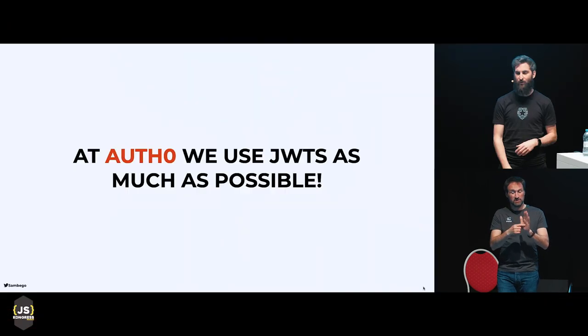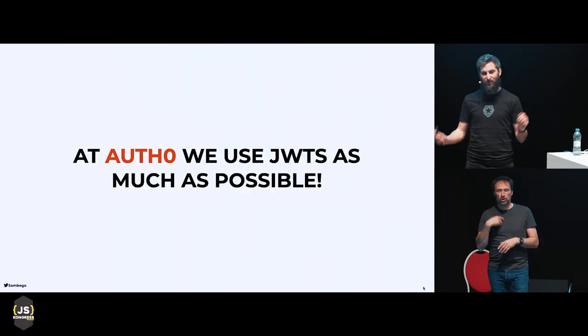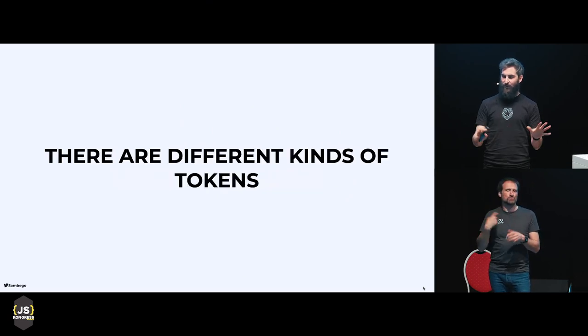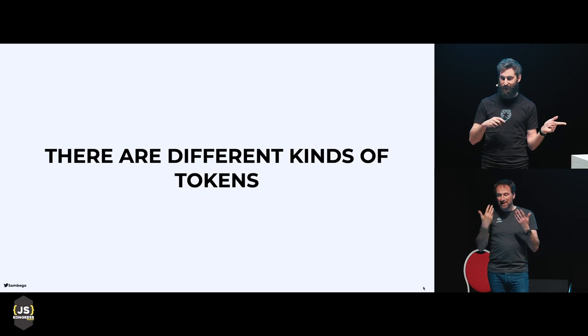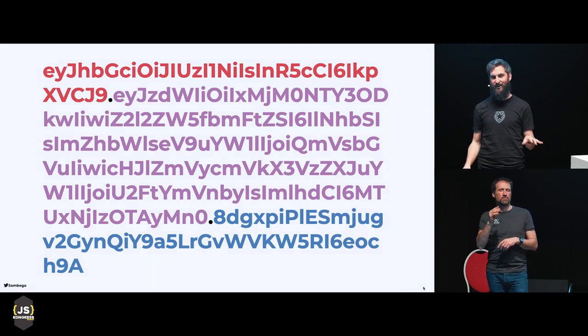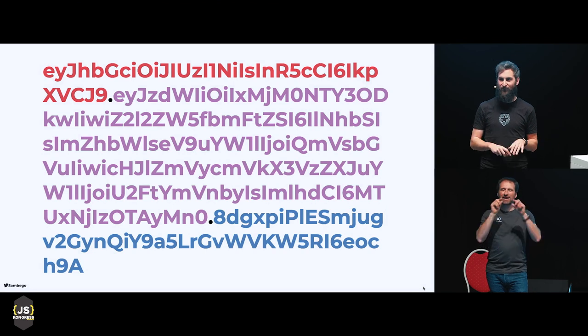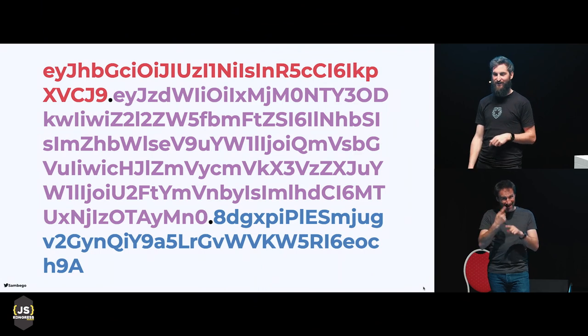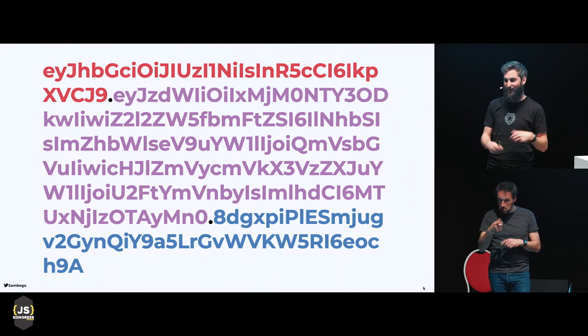At Auth0, we use JSON Web Tokens as much as possible because we like them. This is a JSON Web Token, and as you might see, there are three different parts. Who's ever noticed that a JSON Web Token is made out of three different parts? For those of you who have never seen this, it's okay — you'll learn a thing or two. Let's have a look at the different parts of a JSON Web Token.